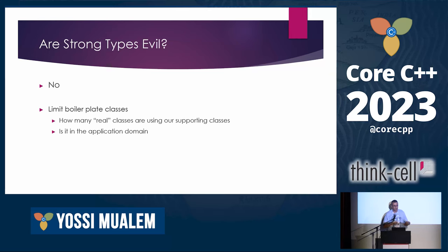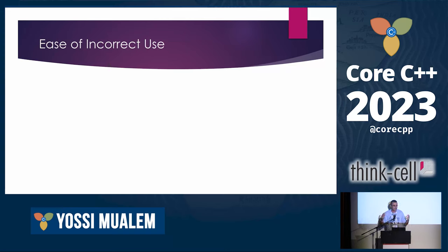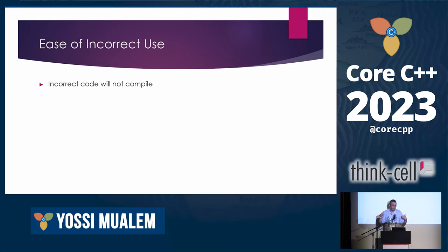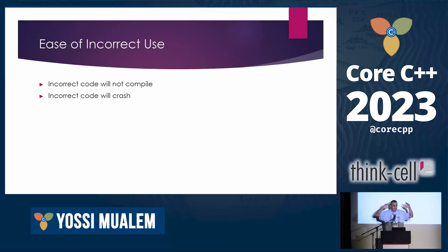Now let's talk about the problem. But first, I'd like to classify the ease of incorrect use — how easy it would be to use an API incorrectly. The best thing is that incorrect code will not compile; that's the case with strong types. The second best thing is that incorrect code will crash — and I mean that the minute you use the API incorrectly, we detect it at runtime and crash immediately or do something about it.